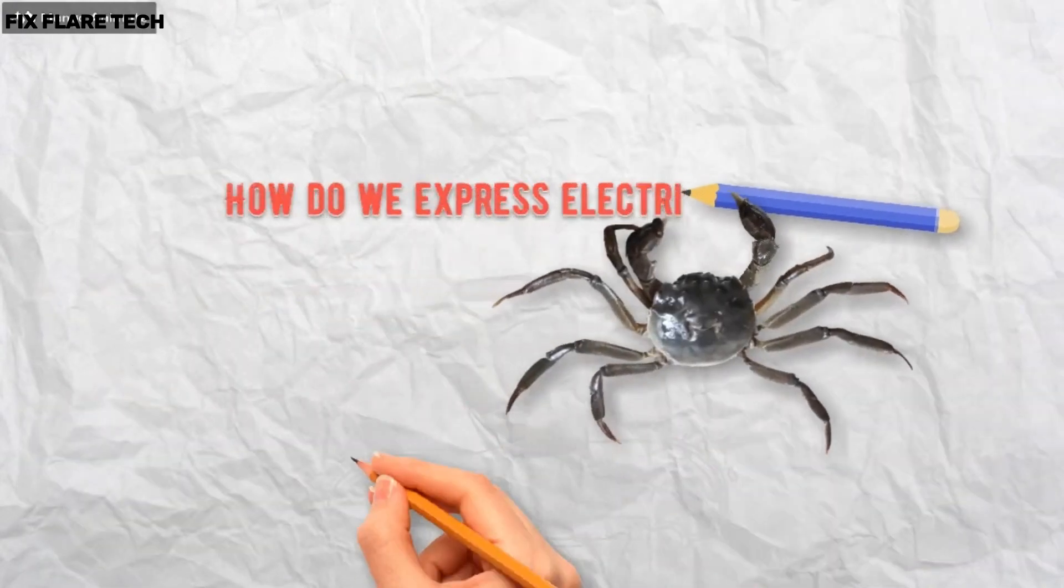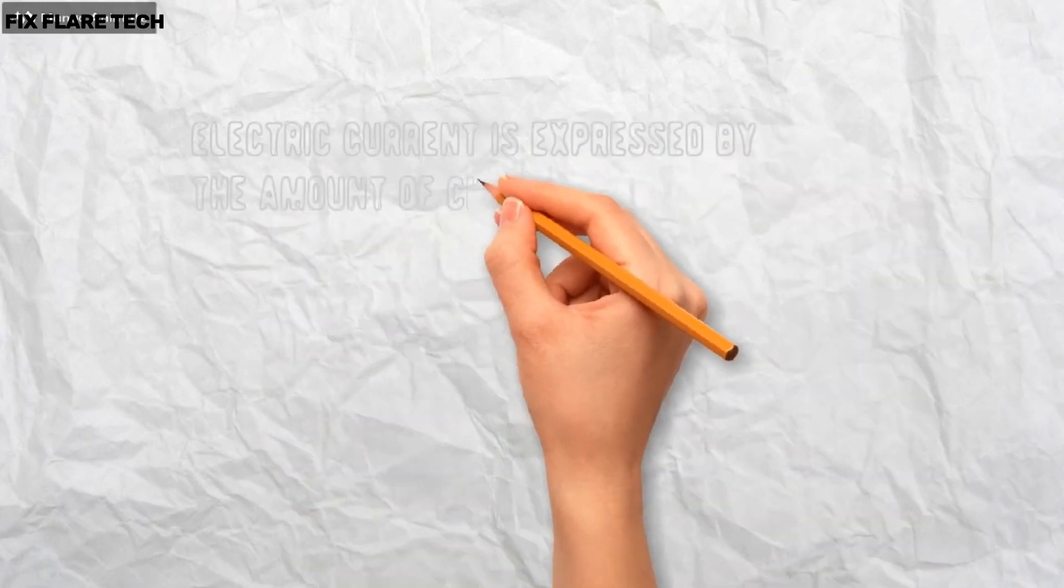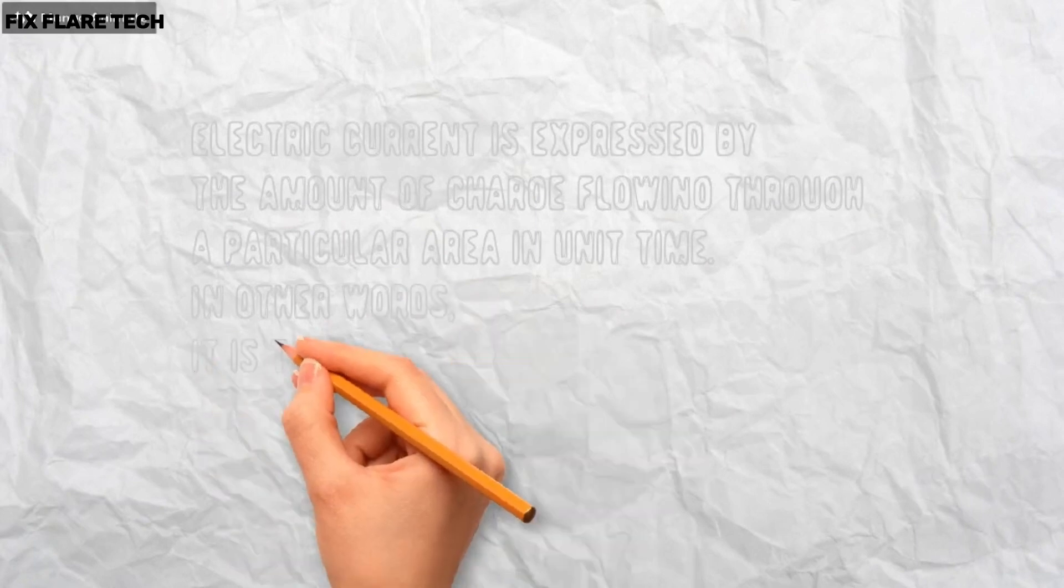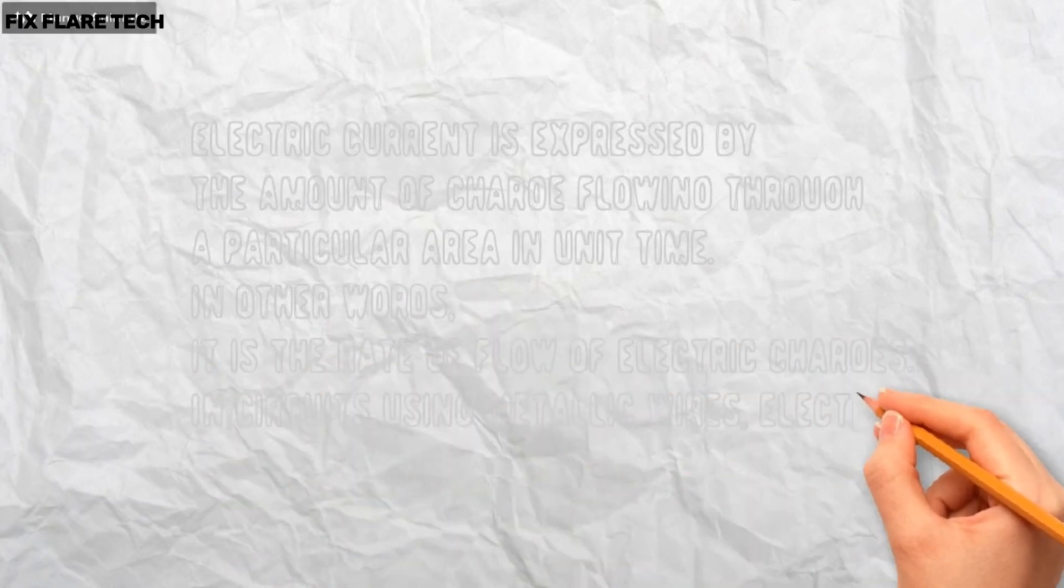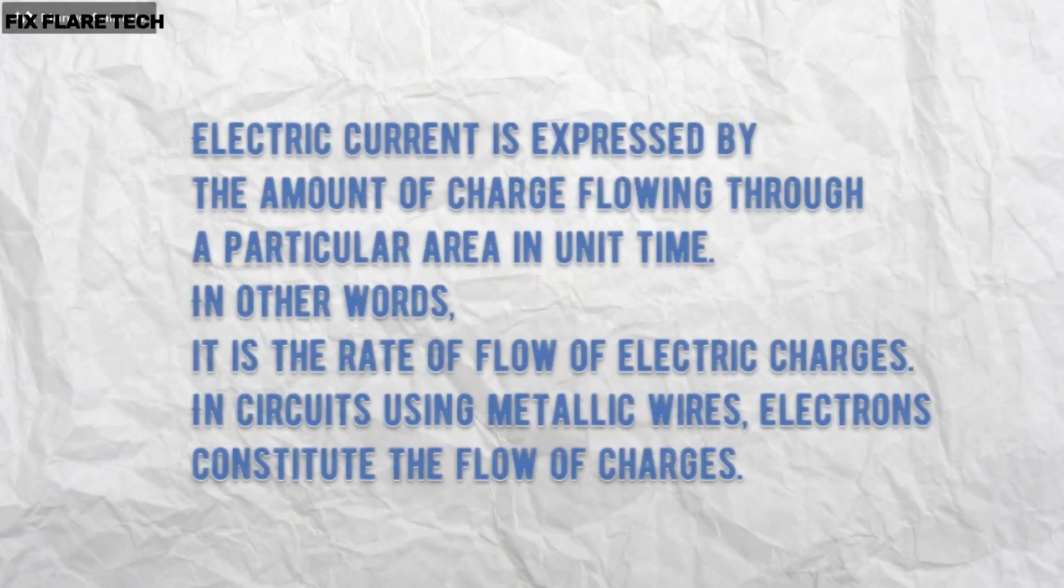How do we express electric current? Electric current is expressed by the amount of charge flowing through a particular area in unit time. In other words, it is the rate of flow of electric charges. In circuits using metallic wires, electrons constitute the flow of charges.